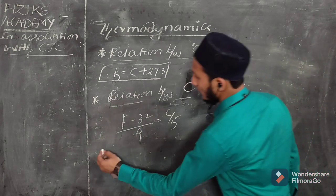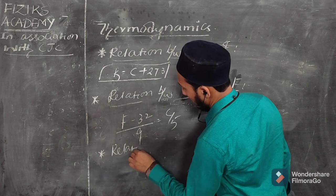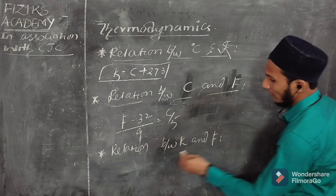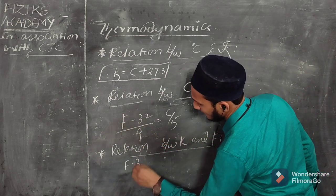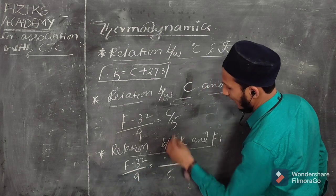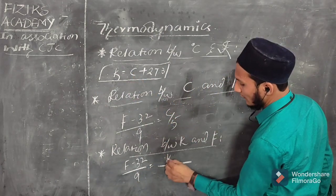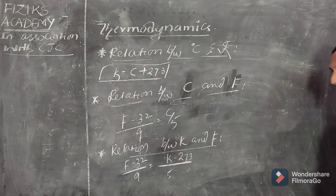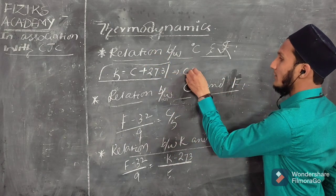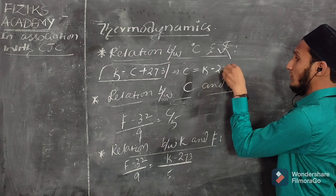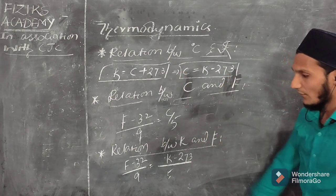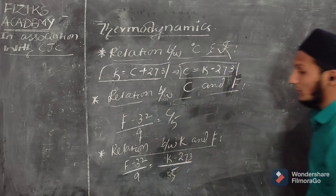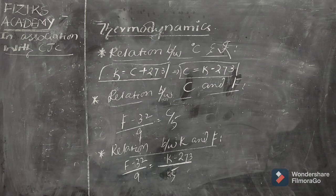For the relation between Kelvin and Fahrenheit, we substitute C with K minus 273 in the Fahrenheit-Celsius formula. So the relation becomes: F minus 32 divided by 9 equals K minus 273 divided by 5.